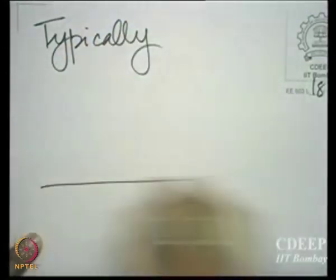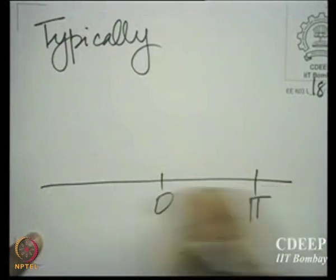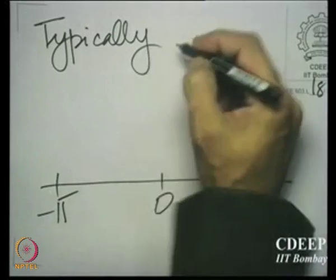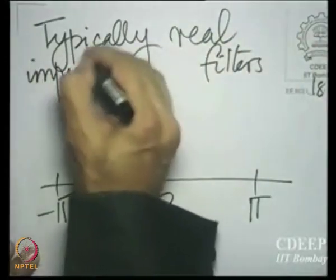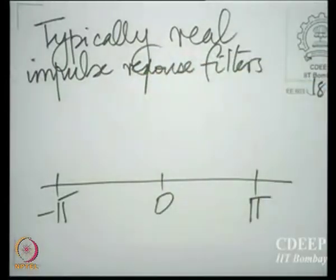Of course, you will agree with me that we need to specify only between minus pi and pi. And we will of course want to deal with real filters — real filters means filters with a real impulse response. If the impulse response is not real, we are incurring the additional demand of complex number arithmetic, which we do not want to do at least initially. So it is easier to deal with real arithmetic. Now, the moment the impulse response is real, what can you say about its frequency response? The frequency response is conjugate symmetric. So the negative and positive frequencies have frequency responses that are complex conjugates — they have the same magnitude and they have opposite phase.